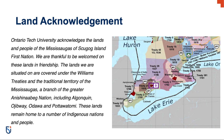These lands remain home to a number of Indigenous nations and people, including Algonquin, Ojibwe, Odawa and Potawatomi peoples. We acknowledge this land out of respect for the First Nations who have cared for Turtle Island, also called North America, from before the arrival of settler peoples until this day. Most importantly, we remember the history of these lands has been tainted by poor treatment and a lack of friendship with the First Nations who called them home. This history is something we are all affected by as we are all treaty people in Canada. Our past defines our present, but if we move forward as friends and allies then it does not have to define our future.